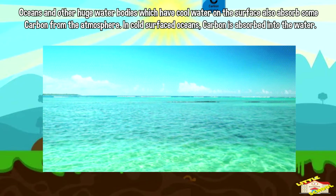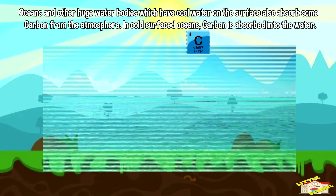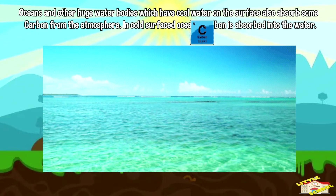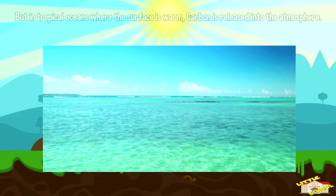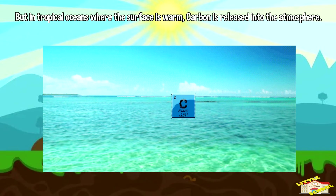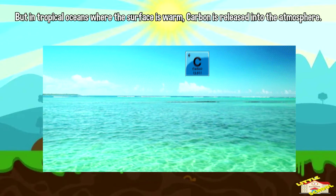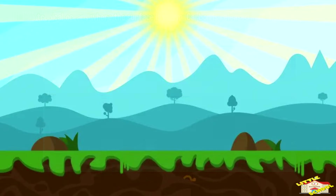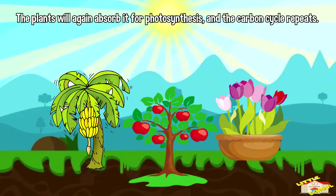Oceans and other large water bodies which have cool water on the surface also absorb carbon from the atmosphere. In cold surface oceans, carbon is absorbed into the water. But in tropical oceans where the surface is warm, carbon is released into the atmosphere. The plants will again absorb it for photosynthesis, and the carbon cycle repeats.